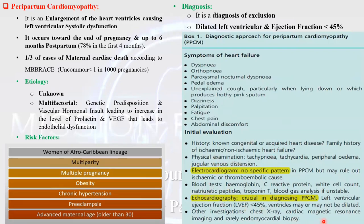The echocardiogram is crucial for diagnosis of peripartum cardiomyopathy. With the timing around the end of pregnancy and ejection fraction less than 45%, after exclusion of other causes, this is how you diagnose PPCM. Regarding blood tests, do routine tests to exclude anemia, infection screen, troponin, and most importantly the natriuretic peptide, which will be increased in cases of peripartum cardiomyopathy.